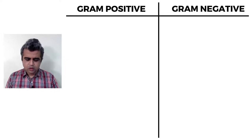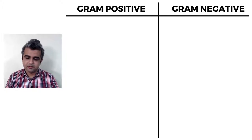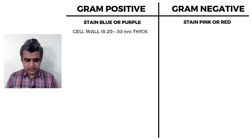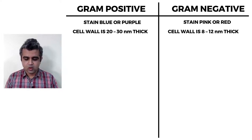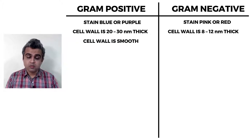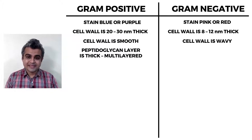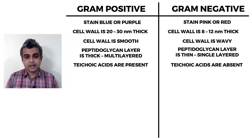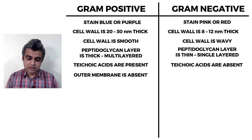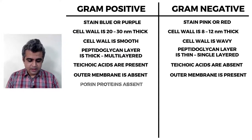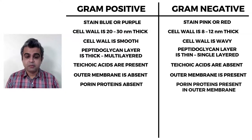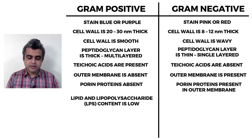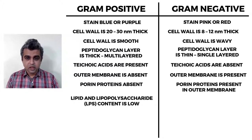Key differences between gram-positive and gram-negative bacteria: gram-positive stains blue/purple; gram-negative stains pink/red. Cell wall thickness is 20–30 nm in gram-positive versus 8–12 nm in gram-negative. Gram-positive has a thick multi-layered peptidoglycan with teichoic and lipoteichoic acids, no outer membrane, and no porins. Gram-negative has a thin single-layered peptidoglycan, no teichoic acids, but has an outer membrane with porins and higher lipid and polysaccharide content.